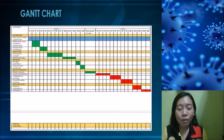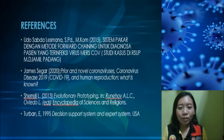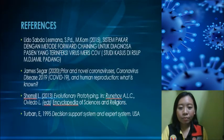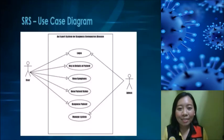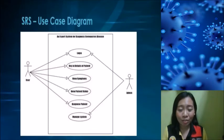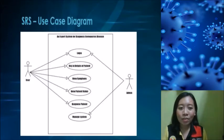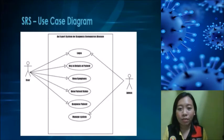This is the figure of my Gantt chart, and this is my reference list. This is the SRA documentation, which includes the use case diagram — the use case diagram for the expert system for diagnosis of coronavirus disease.